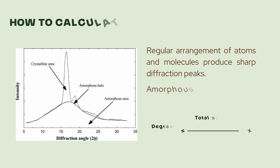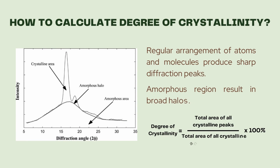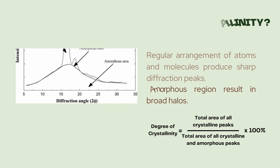XRD is used to determine the degree of crystallinity. Regular arrangement of atoms and molecules produces sharp diffraction peaks, while amorphous regions produce broad halos. The diffraction pattern of polymers contains a combination of both. Degree of crystallinity is estimated by integrating the relative intensities of peaks and halos.